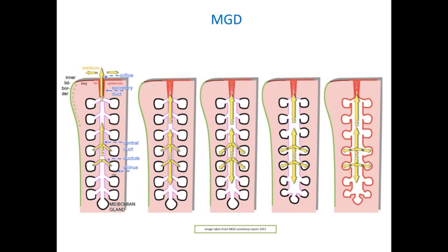This picture from the MGD workshop shows the different stages of MGD. When the orifice gets blocked due to hyperkeratinization of the epithelium of the lid margin, it prevents meibum secretions from freely coming out. The meibum builds up and slowly increases the size of the central duct while the acini slowly shrink, which can finally lead to atrophy of the acini. The oil gets buttered up, becomes too thick to get out, and finally the gland atrophies. This is the sequence of MGD.